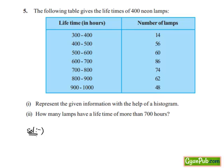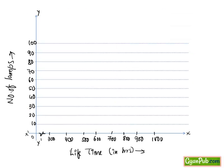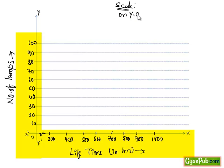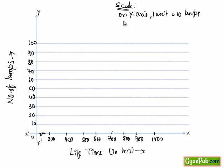So let's take a graph such that on the x-axis is lifetime in hours and on the y-axis is number of lamps. On the y-axis, 1 unit equals 10 lamps with an increment of 10. On the x-axis, we took 1 unit equal to 100.